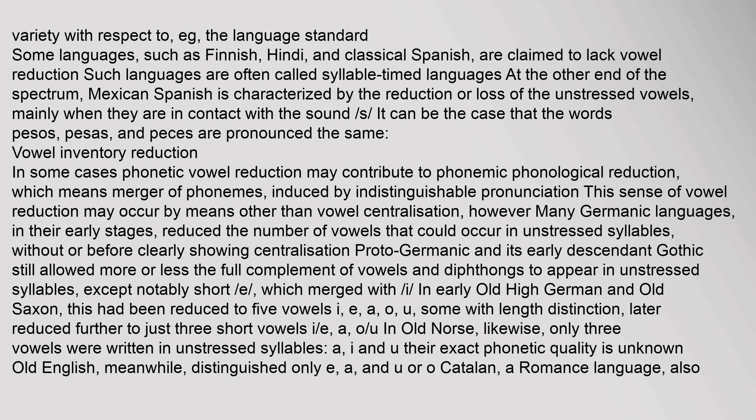Vowel inventory reduction: in some cases, phonetic vowel reduction may contribute to phonemic or phonological reduction, meaning merger of phonemes induced by indistinguishable pronunciation. This sense of vowel reduction may occur by means other than vowel centralization. Many Germanic languages, in their early stages, reduced the number of vowels that could occur in unstressed syllables without clearly showing centralization. Proto-Germanic and its early descendant Gothic still allowed more or less the full complement of vowels and diphthongs in unstressed syllables, except notably short /e/, which merged with /i/. In early Old High German and Old Saxon, this had been reduced to five vowels: i, e, a, o, u.